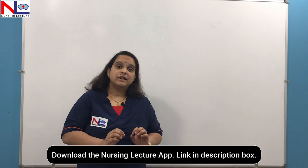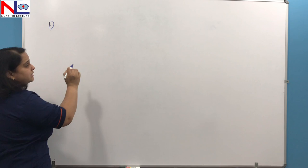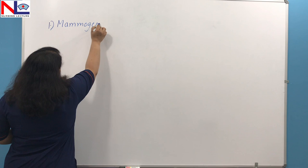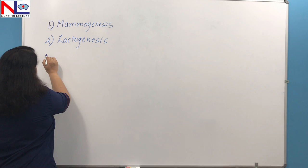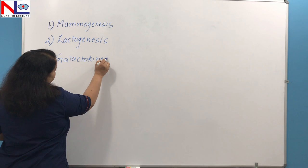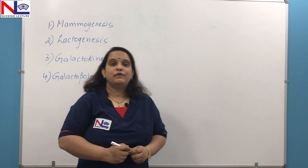This is usually completed by four stages or four phases. The first is mammogenesis. The second physiology after mammogenesis is lactogenesis. Then comes galactokinesis, and the last one is galactopoiesis. These are the four steps through which lactation completes.